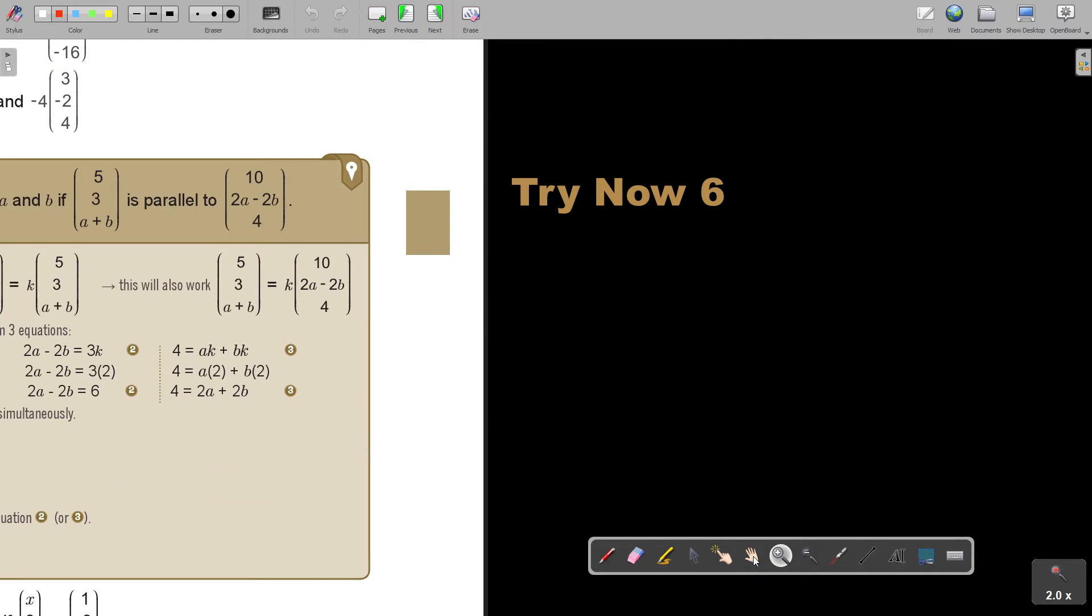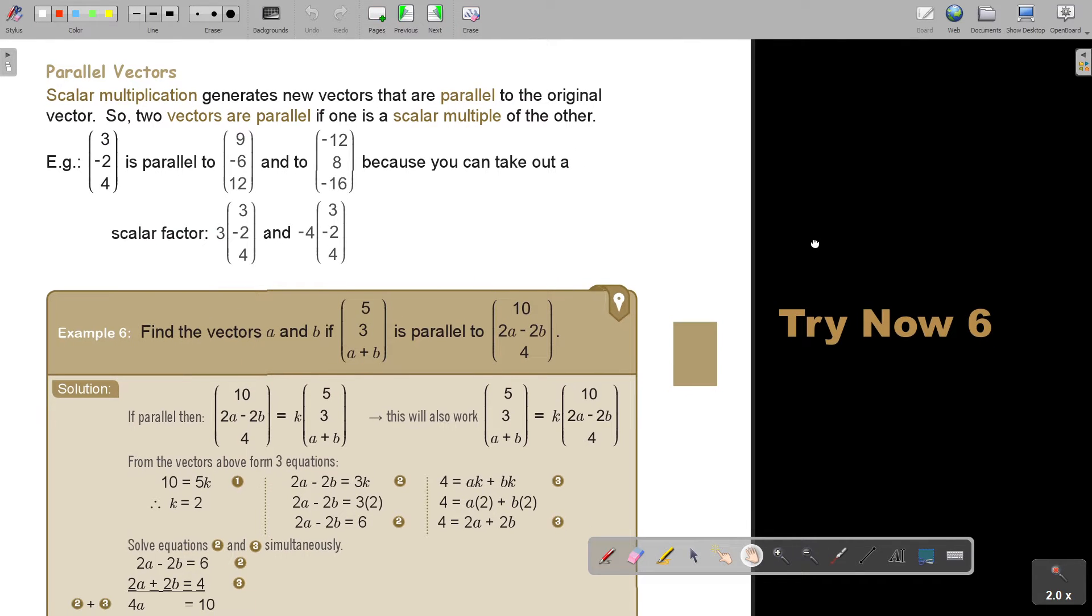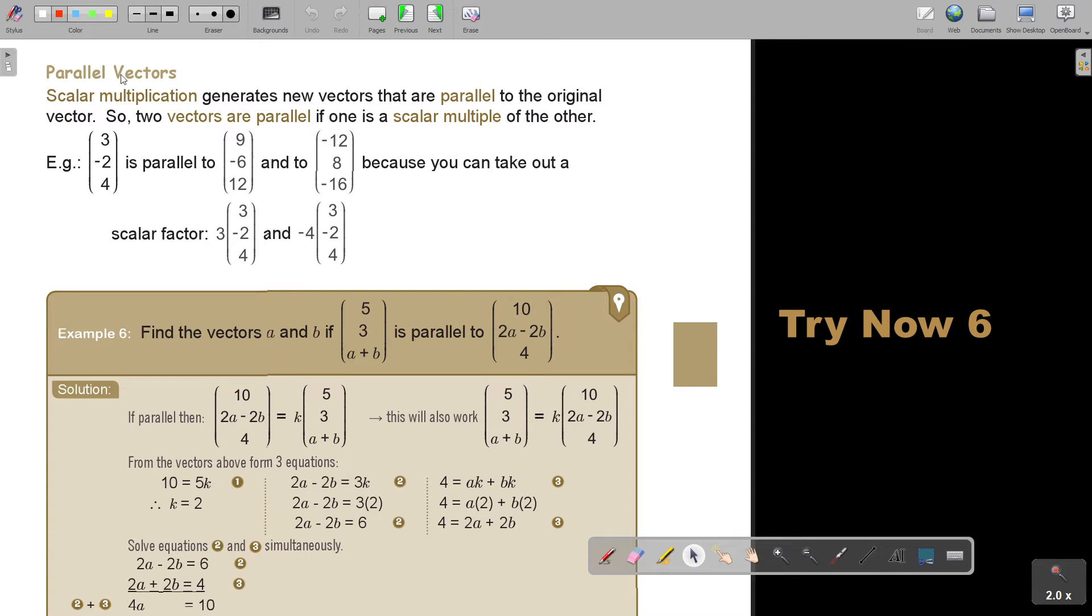Let's look at parallel vectors. Scalar multiplication generates new vectors that are parallel to the original vector. So two vectors are parallel if one is a scalar multiple of the other. This is parallel to this and to this, because I was multiplying there with 3. And then if I was looking at this one, I was multiplying by negative 4. Then it becomes negative 12 by positive 8, because it's a negative and a negative, and then negative 16.